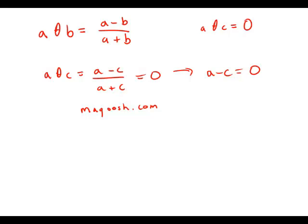So meanwhile, we know that the numerator has to equal zero. Well, if a minus c equals zero, that means that a equals c. And so what does c equal? Well, c has to equal a, which is answer choice E.